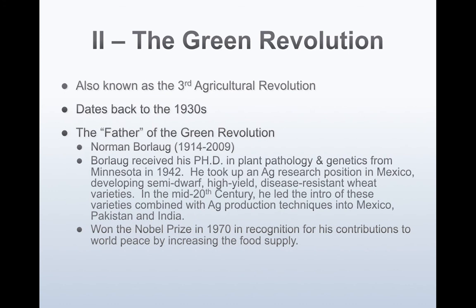The beginning of the Green Revolution — also known as the Third Agricultural Revolution — dates back to the 1930s. Norman Borlaug, the father of the Green Revolution, received his PhD in plant pathology and genetics from Minnesota in 1942. He took up an agricultural research position in Mexico, developing semi-dwarf, high-yield, disease-resistant wheat varieties. In the mid-20th century, he led the introduction of these varieties combined with modern agricultural production techniques into Pakistan, Mexico, and India. He won the Nobel Prize in 1970 in recognition of his contributions to world peace by increasing the food supply.